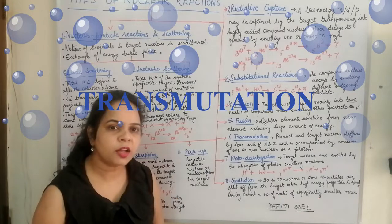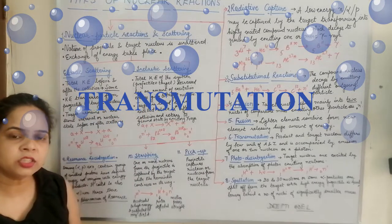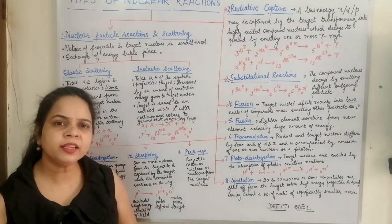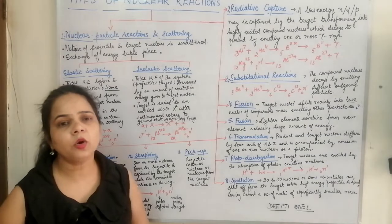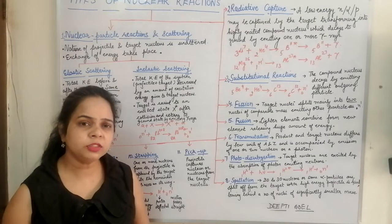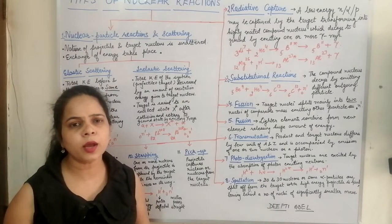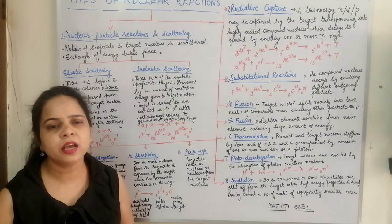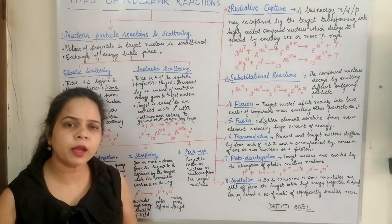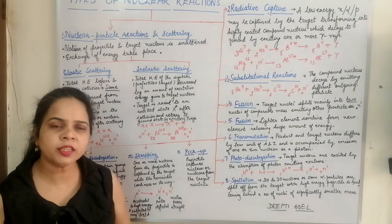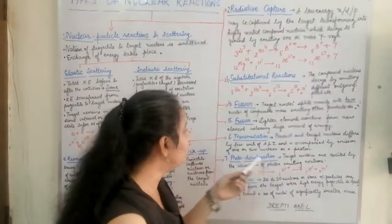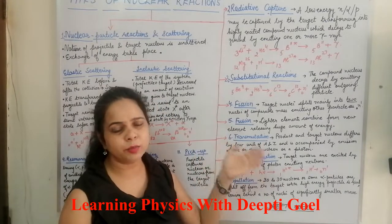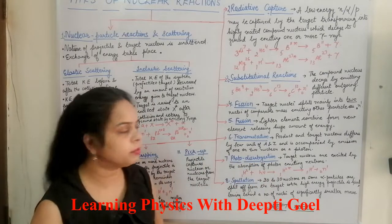The next reaction is the transmutation reaction. In transmutation, the product nucleus and the target nucleus do not differ by much — they differ by just a few nucleons, a few atomic numbers, meaning they are very close to each other in the periodic table. The products and target nuclei differ by only a few units of A and Z, accompanied by the emission of one or two nucleons — a proton or neutron — or a photon.